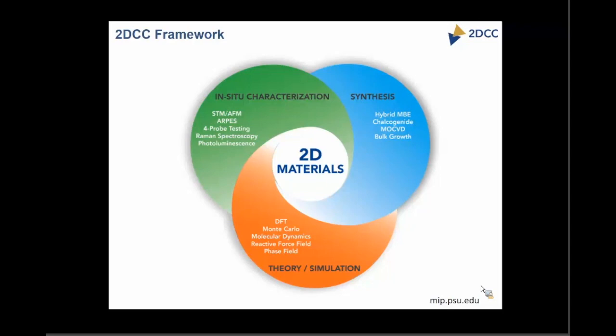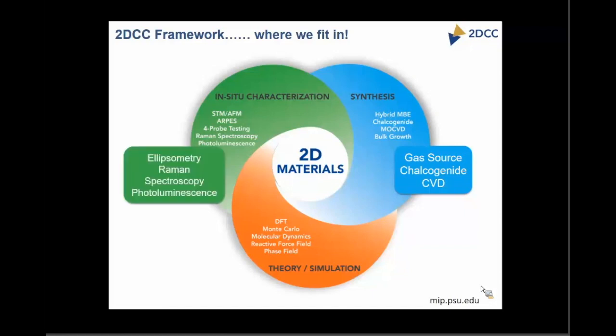What we are working on specifically is the thin film part. We are looking at chemical vapor deposition to grow transition metal dichalcogenides. We are also looking to incorporate in-situ characterization like ellipsometry, Raman spectroscopy, and photoluminescence, so that we can gather information about the growth as it happens, or gather information about these samples without exposing them to ambient.